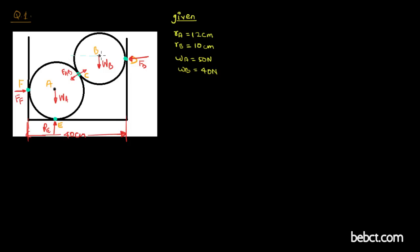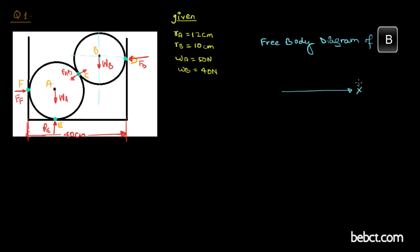Now let's draw a free body diagram of ball B with reference axes: the X axis and the Y axis. The first force, WB, acts downwards in the negative Y direction. Another force is FD, and the third force is FC — the mutual force FAB — which makes an angle theta with the horizontal. We can draw a horizontal line and identify that this angle theta forms a right-angled triangle.